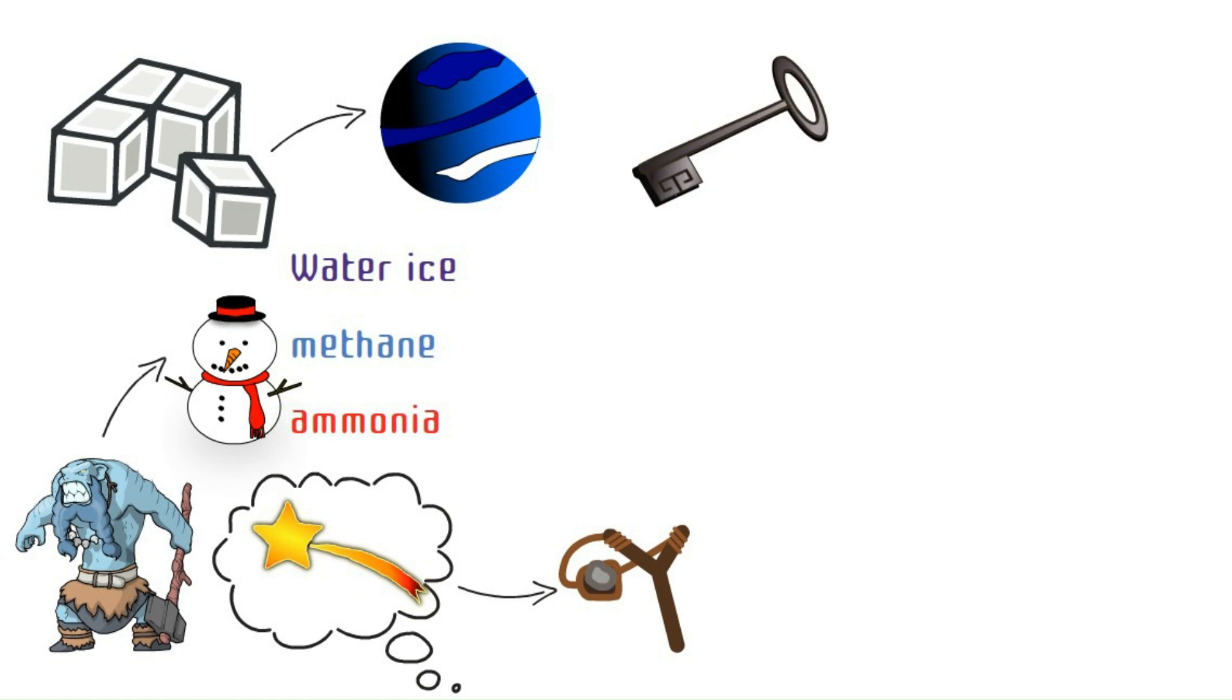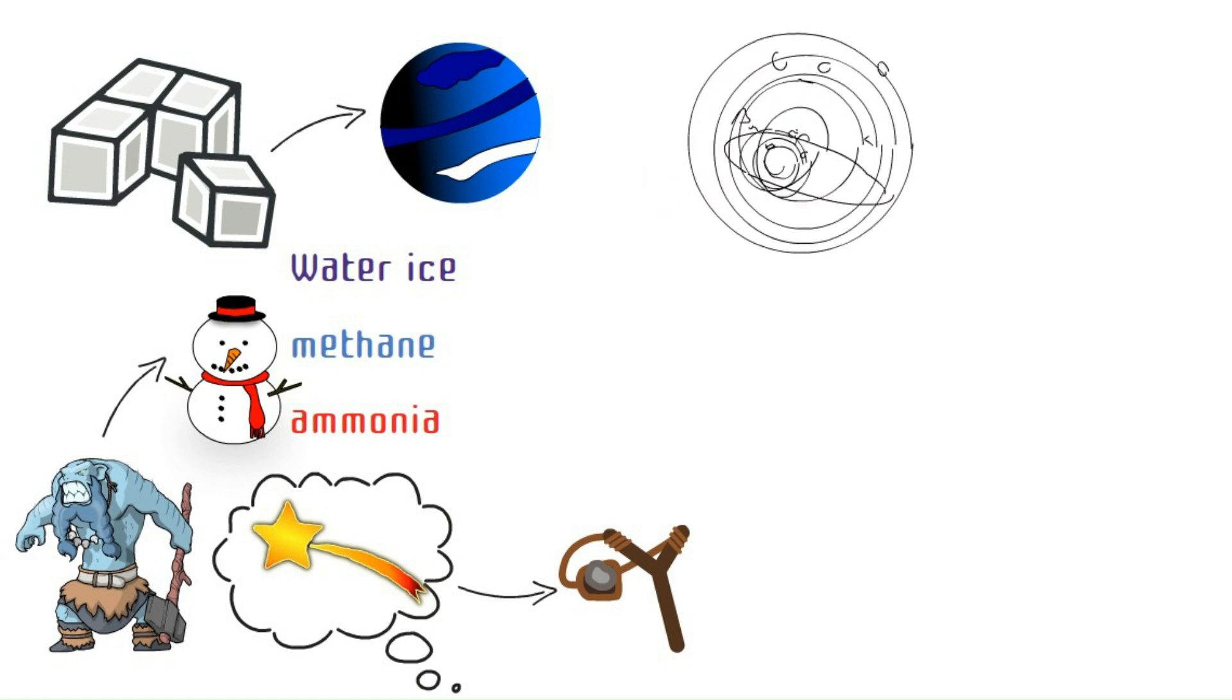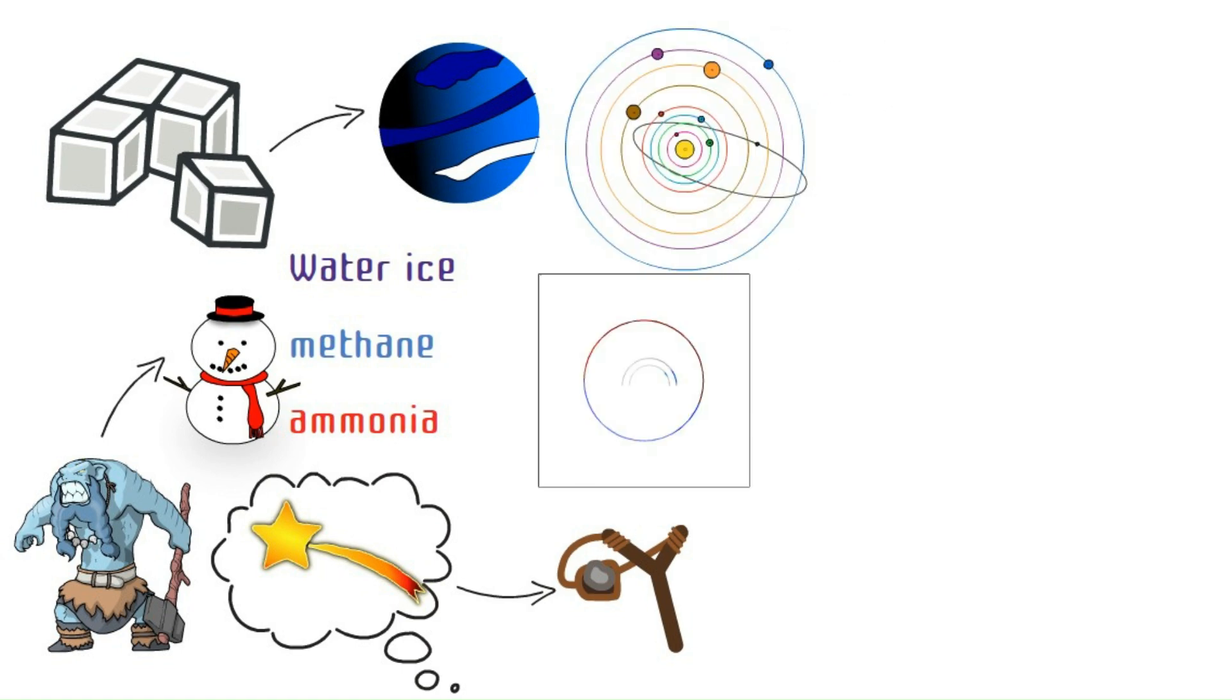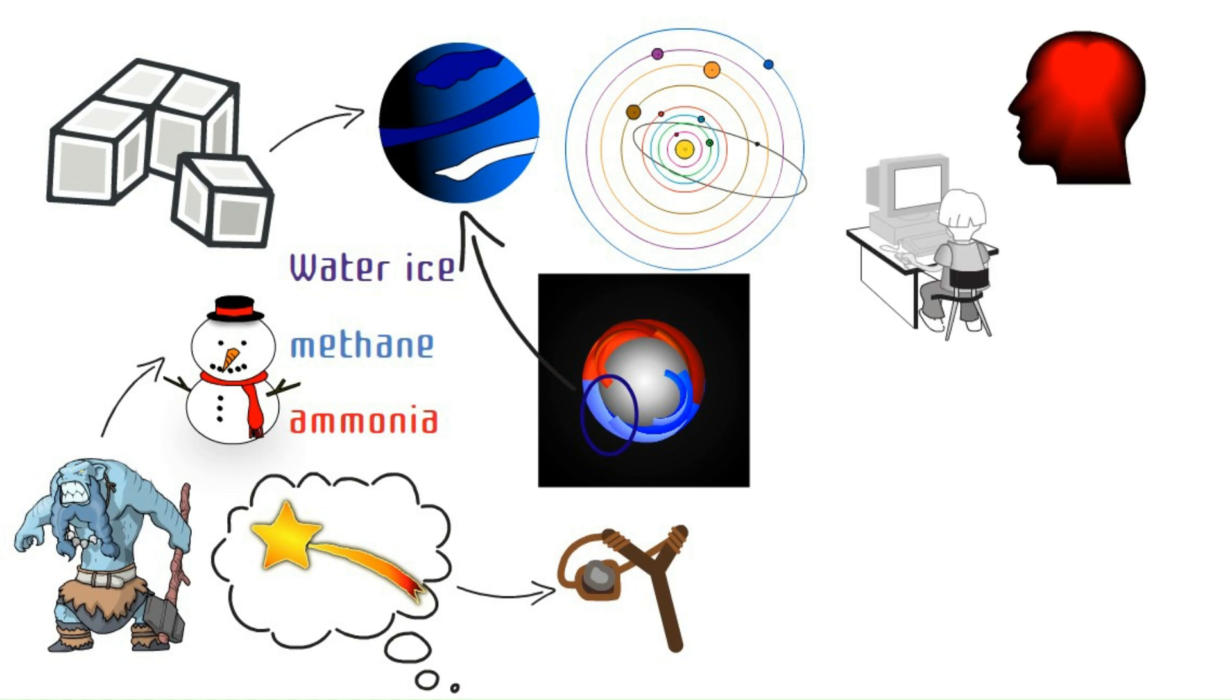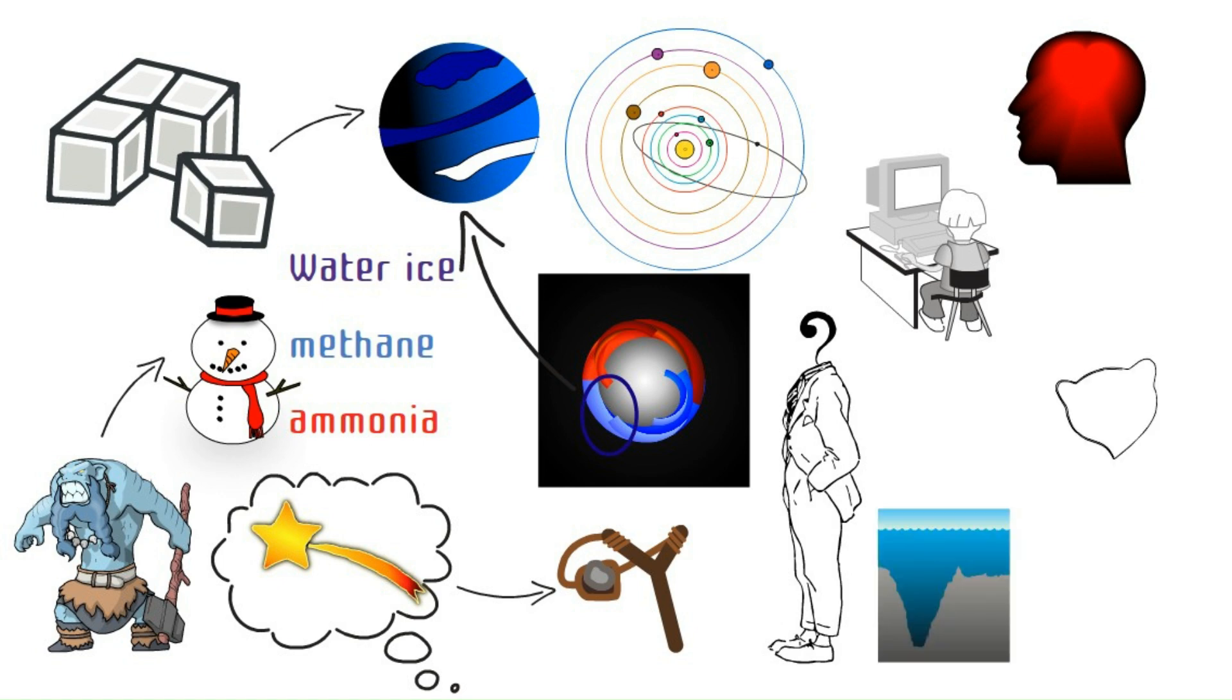These frigid giants might hold the key to our solar system's birth. Since it all started as a dusty cloud, ice giants likely formed in the chilly outer areas. Studying their makeup can help us picture the conditions back then. These icy worlds might even hide secret oceans under their frozen exteriors, maybe with life that loves the cold. That'd be a truly icy discovery.